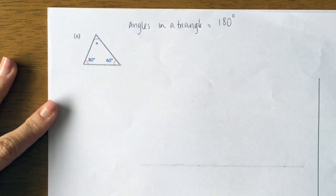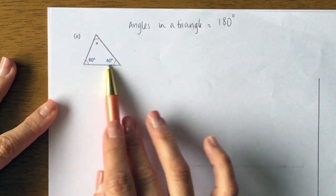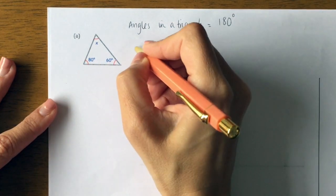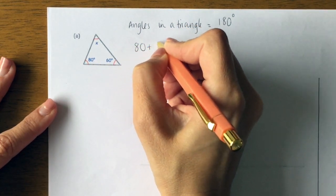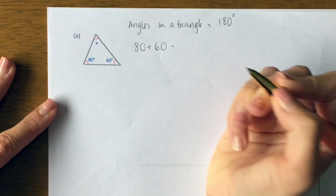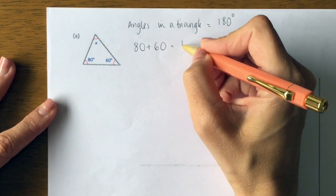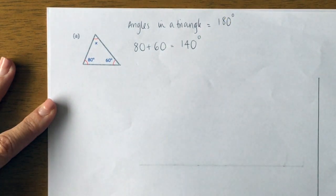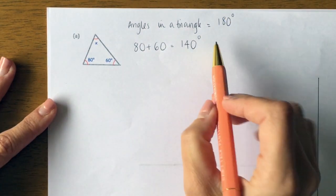So I know two angles, so the first step for me is to add the two angles together: 80 add 60. You should be okay with that to give you 140 degrees. And if you're not sure, set it up as a column addition, so one above the other, and then add them together.